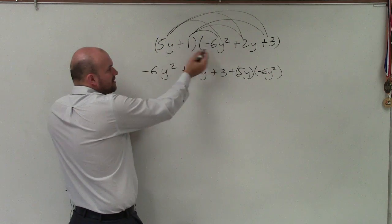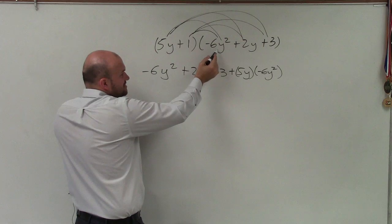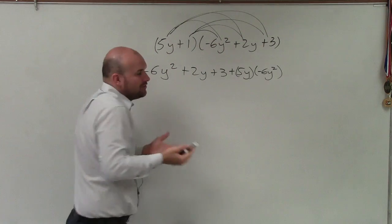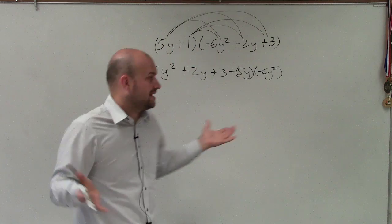Now, I could have done the exact same thing with 1, with doing 1 times negative 6y squared, 1 times 2y. But we all know 1 times any one of those numbers is just going to be exactly that term.